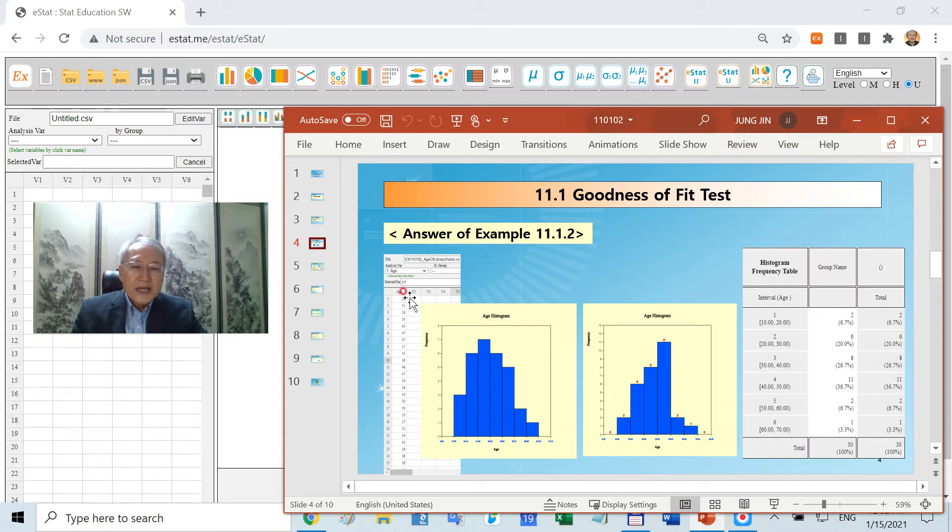You enter data in column one of ESTAT. Then plot the histogram. If you're not satisfied with the default interval, you may switch to what you want. This will generate a frequency table related to the histogram. This is the interval and this is the observation.